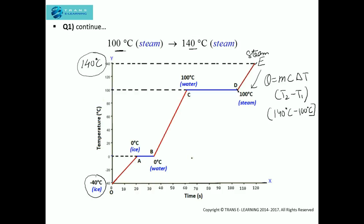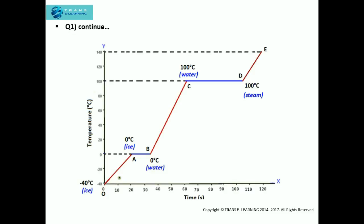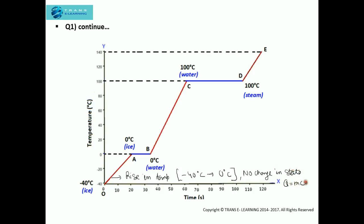As a quick review: phase OA represents a rise in temperature from minus 40 degree Celsius to 0 degree Celsius with no change in state, and the heat is given by MC delta T. Phase AB represents the melting process — the conversion of ice at 0 degree Celsius to water at 0 degree Celsius — and in this phase there is a change in state.